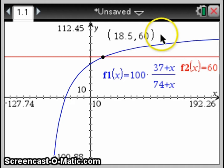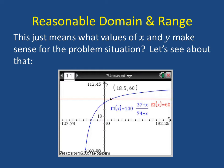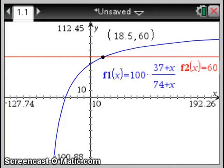Well, what about the reasonable domain and range? What does that mean? Well, it just means what values of x and y make sense for the problem situation. Well, let's find out about that for this example. So here's the graph that we just analyzed. We found out that I could get to 60% wins by winning over 18 games, so 19 games or more. And so let's think about what a reasonable domain and range for this would be.